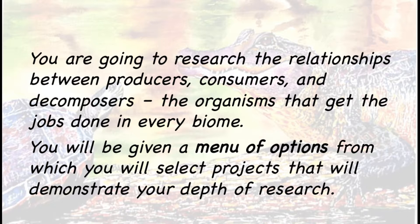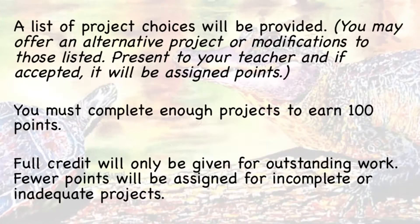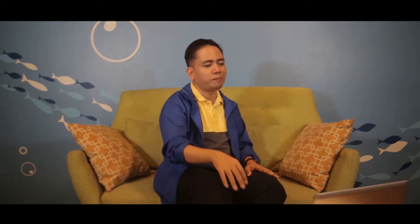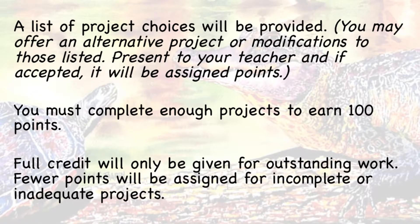So what are these menus? You will be given a list of project choices — more than two options. You may offer an alternative project or modification to those listed, subject to your approval. But the idea is they have the power to choose. They have the power to actually propose a certain project. You must complete enough projects to earn 100 points. Full credit will only be given for outstanding work.